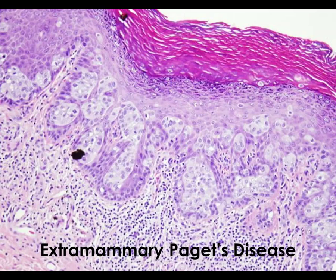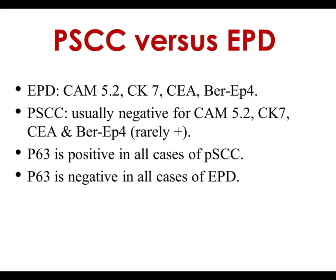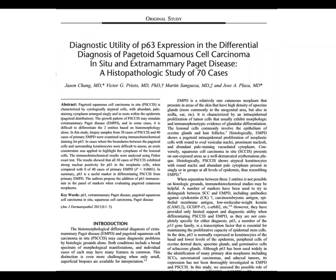Extramammary Paget's disease is usually strongly positive for CAM5.2, CK7, and CEA, whereas squamous cell carcinoma in situ is usually negative — however I have seen many cases of squamous cell carcinoma in situ positive for these markers. So if you have an immunocompromised patient presenting with patches in the genital area and you're not sure whether it's squamous cell carcinoma or Paget's disease, p63 is quite useful. We published this: all cases of squamous cell carcinoma in situ were positive for p63, whereas extramammary Paget's disease — which arises from the sweat duct — is usually negative for p63.